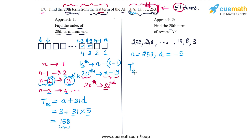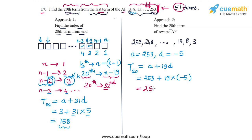T_20 of the reverse AP = A + 19D = 253 + 19×(−5) = 253 − 95 = 158. We get the exact same answer as the first approach.